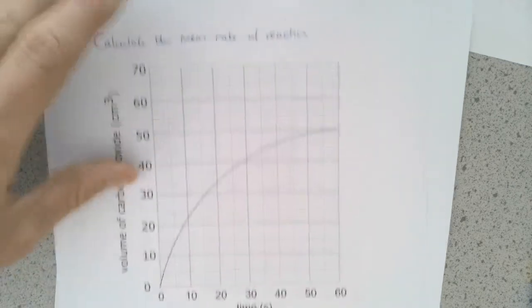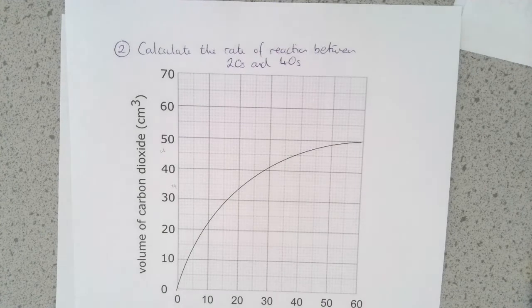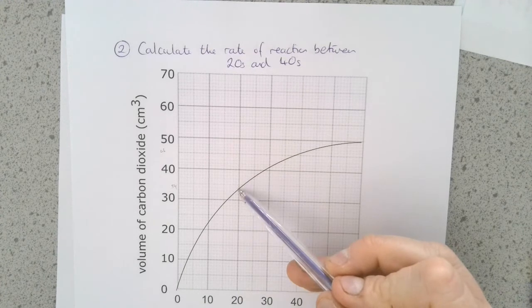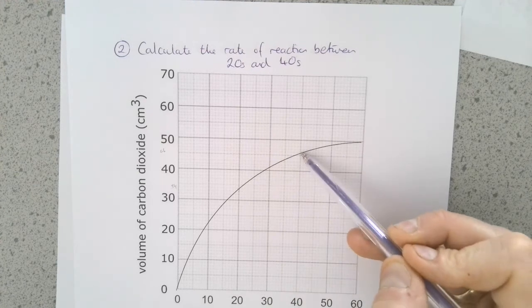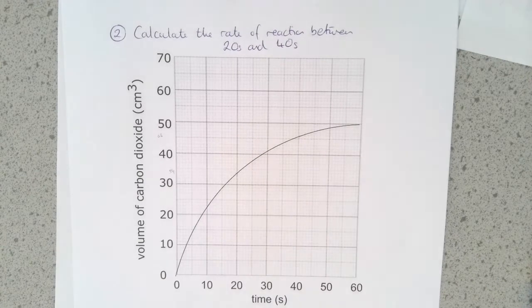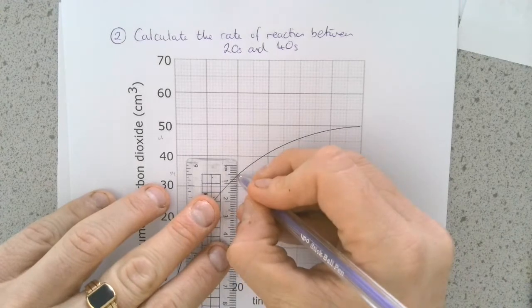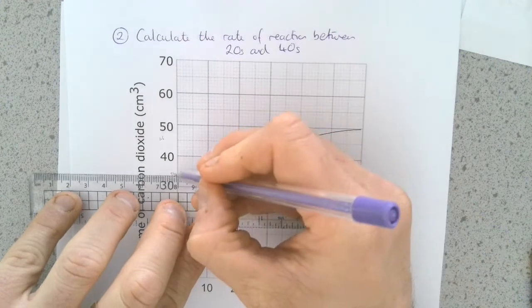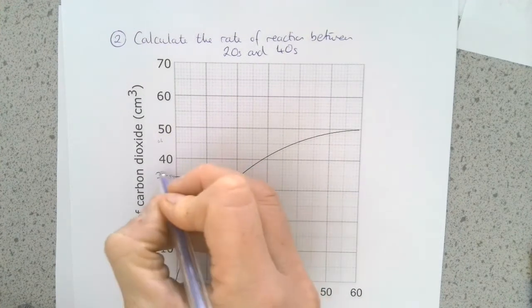The second thing that we want to do is have a look at calculating the rate of reaction between two particular points. This time I've said here we're going to calculate the rate of reaction between 20 seconds, so 20 seconds here, and 40 seconds. So we need to work out the change in volume or change in the amount of the product. So drawing a line from 20 seconds up to the line and across to here, we can see that that crosses the y-axis at 34 cubic centimeters.